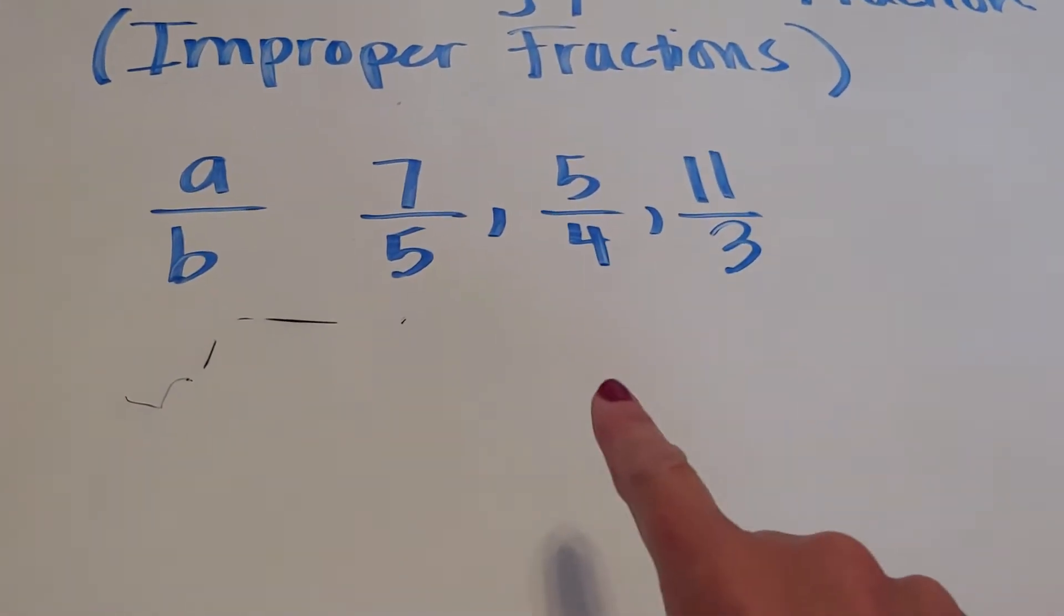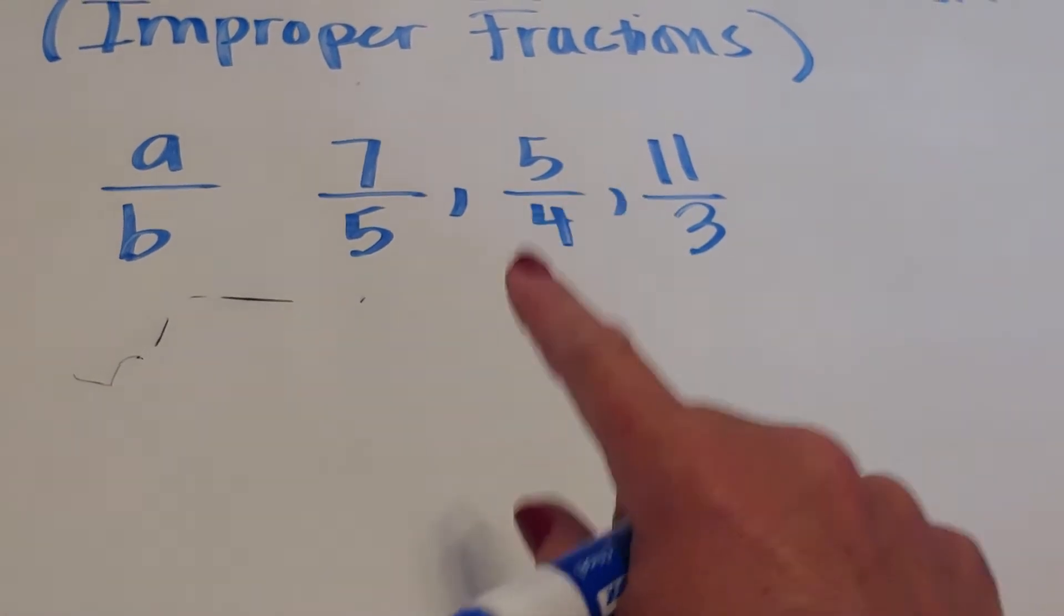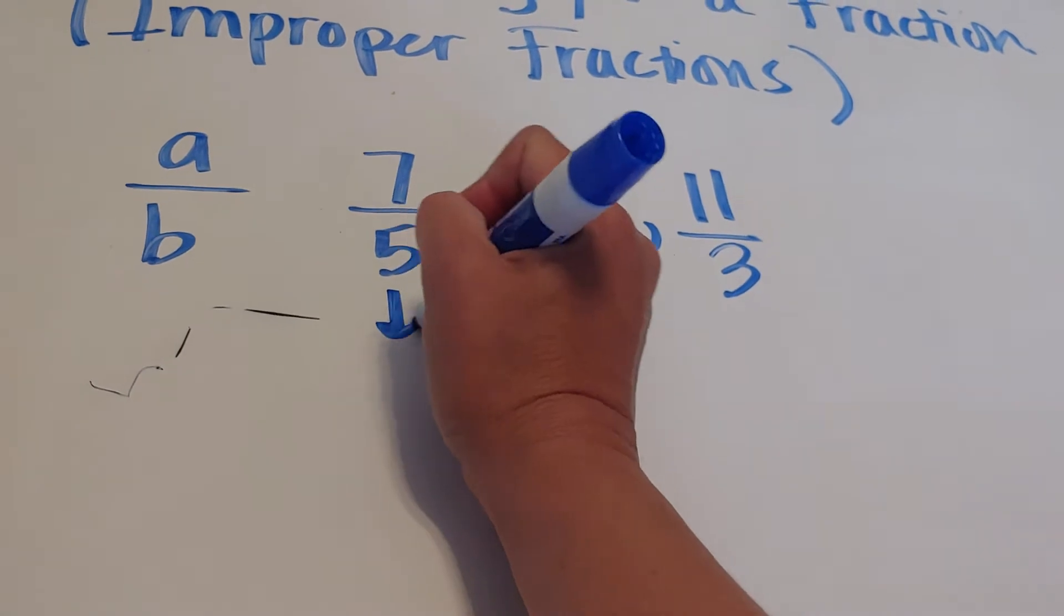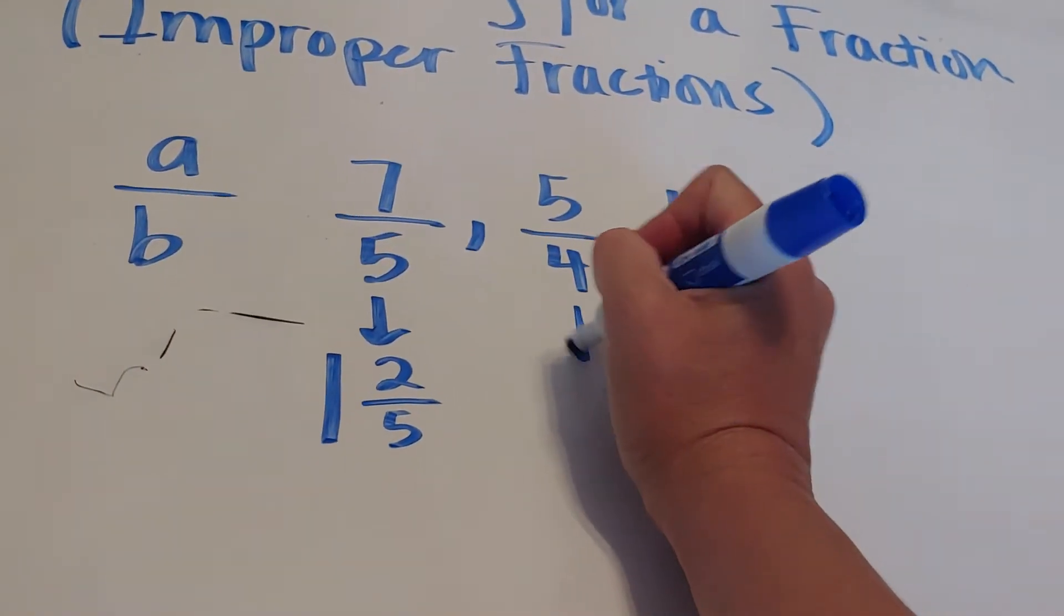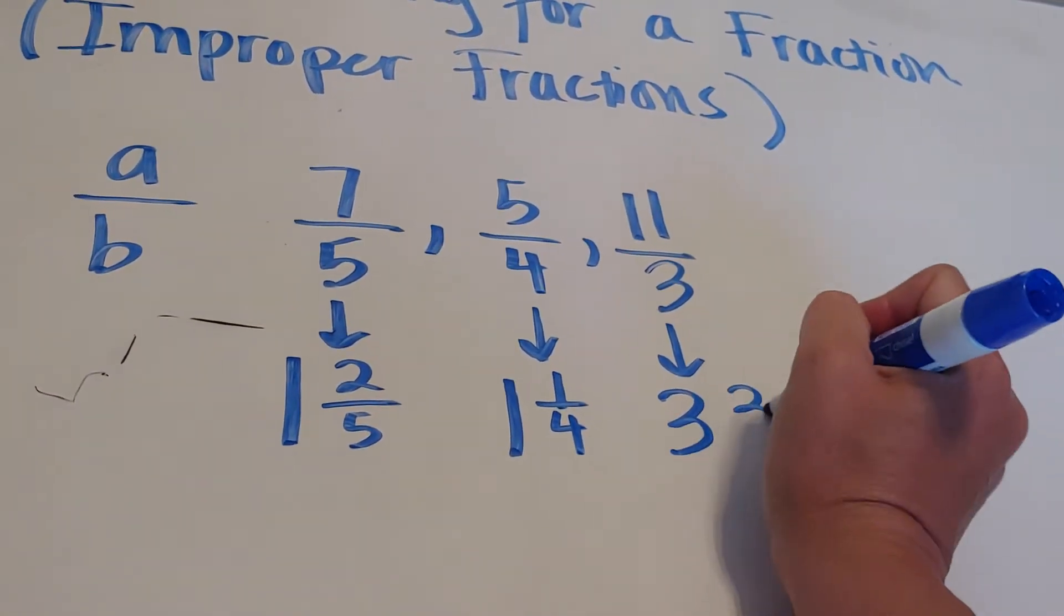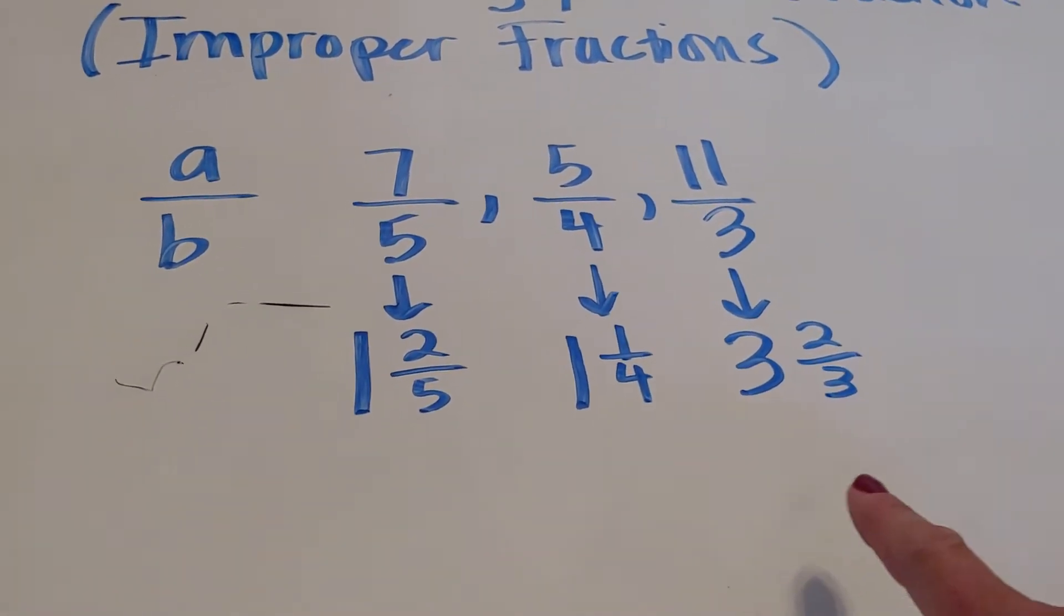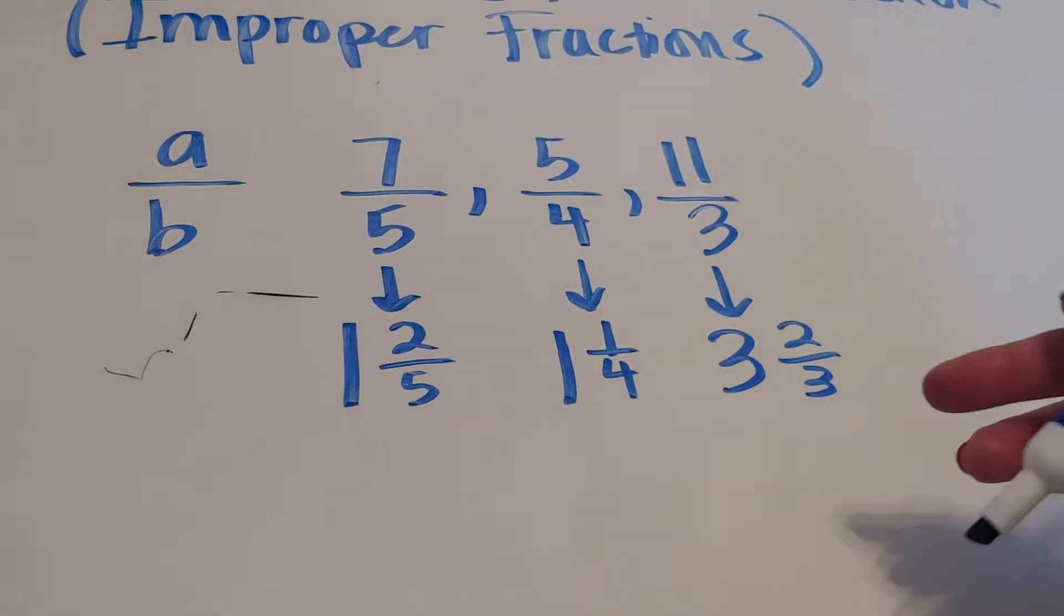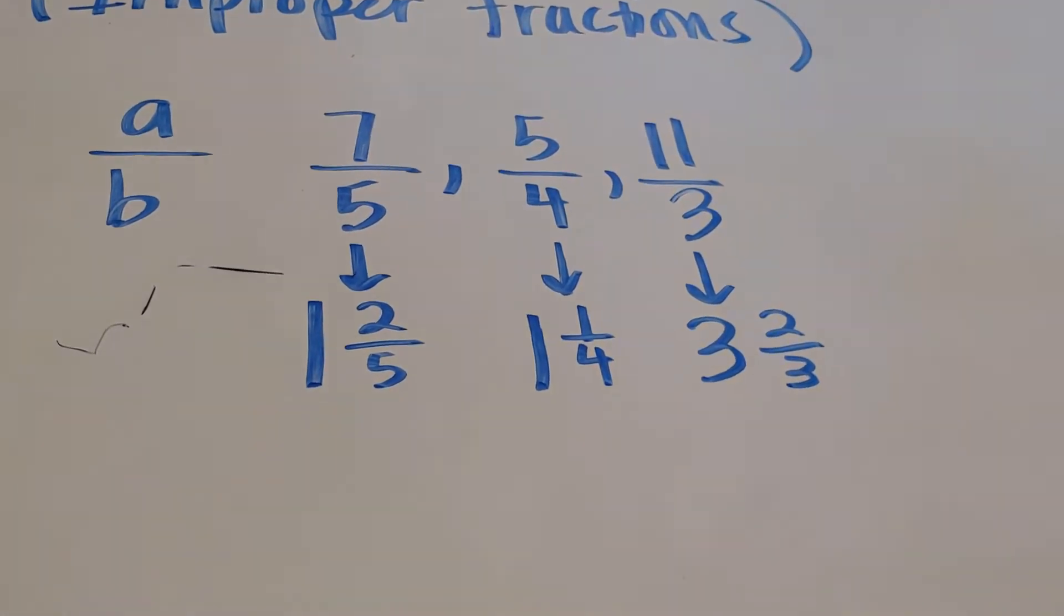So what happens is that actually shading objects is a good way to go from improper fractions to mixed numbers. Because what some of you might be doing right now, some of you might be going, oh well, this is 1 and 2 fifths. And this is 1 and 1 fourth. And this is 3 and 2 thirds. Some of you are doing that, not all of you. What these are called are mixed numbers because I have a whole part and a fractional part. Now, a good way to teach why these two are equal has to do with shading.